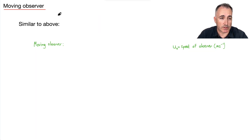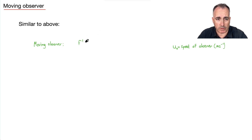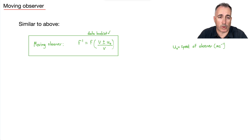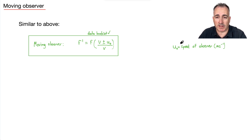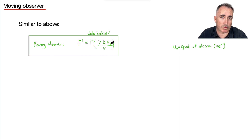What if it's the observer that's moving? Then we have another equation: F-prime equals F times the quantity V plus or minus U-O, all over V. The variables are the same as before — the only difference is U-O, which is the speed of the observer, whereas before S was for source. The plus or minus now goes on the top.